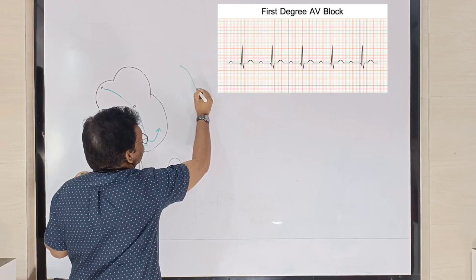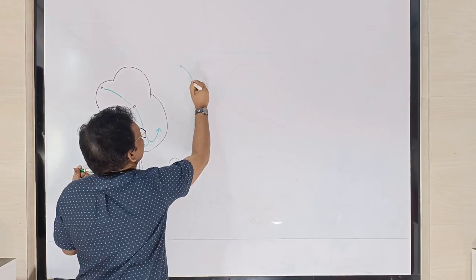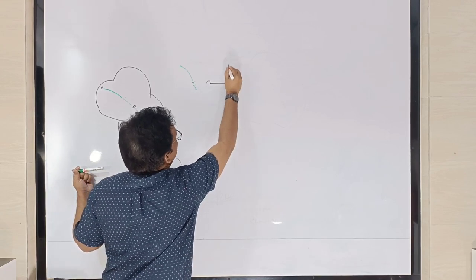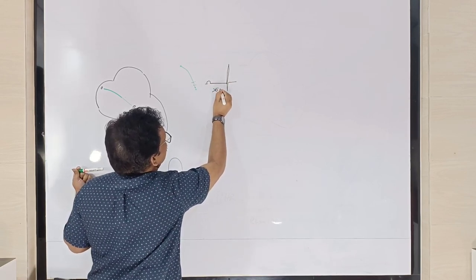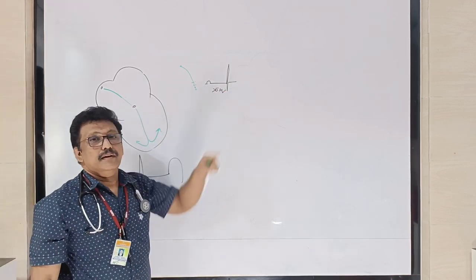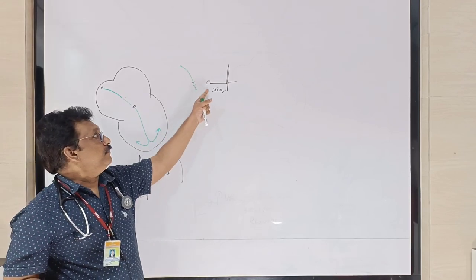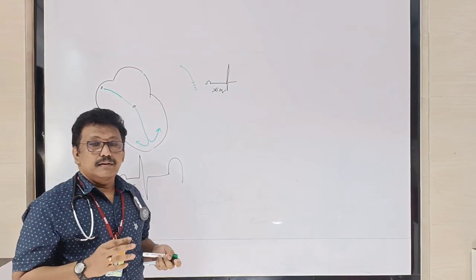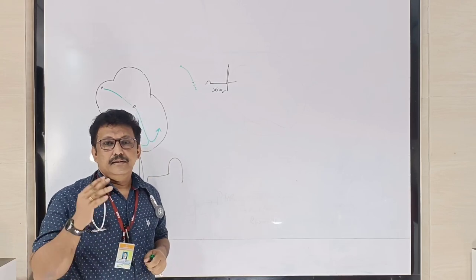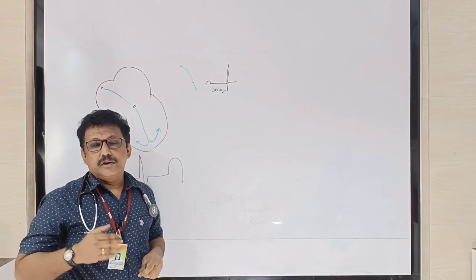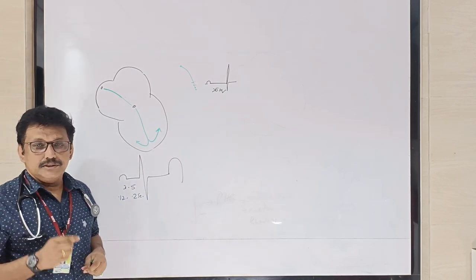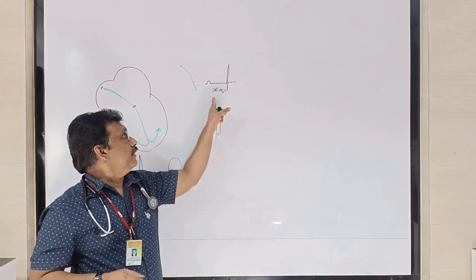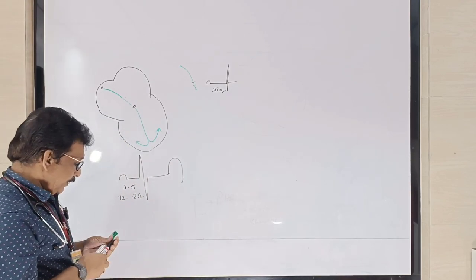If there is a minimal problem in the SA node to AV node conduction — some conduction delay — what happens is the PR interval prolongs. Normally three to five small squares; in first degree heart block, the PR interval is prolonged beyond five squares. The P wave comes but the QRS complex is delayed. First degree heart block is seen with drugs like beta blockers, diltiazem, verapamil, digoxin, ischemic heart disease, age, or certain toxins. It produces no symptoms — only a prolonged PR interval on ECG.